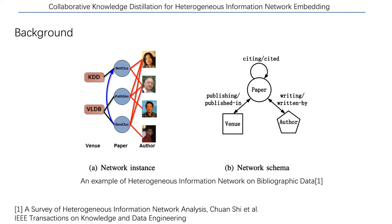For example, the relationship between authors can be measured by author-paper-author or author-paper-venue-paper-author, which means co-authorship or two authors publishing papers in the same venue. Considering these two metapaths in the bibliographic network, we believe there exists correlation between them since two authors who co-authored a paper have a higher probability of publishing in the same venue. Based on this observation and assumption, we face the second research question: if there exists correlation among metapaths, is it useful for HIN embedding?